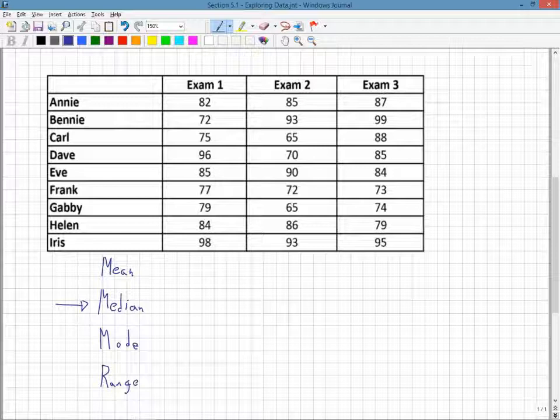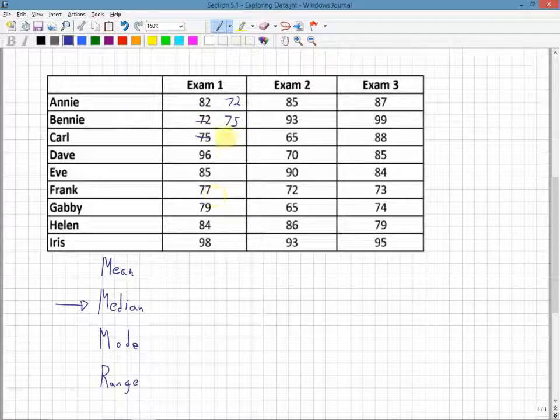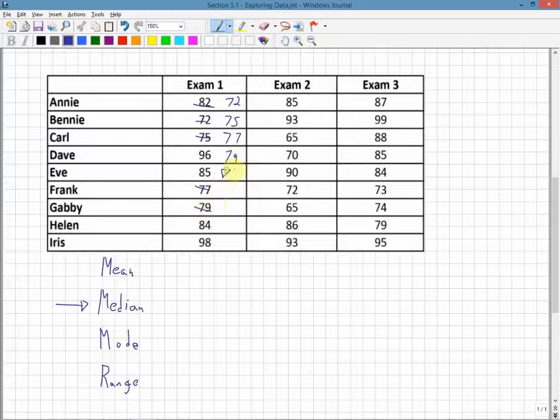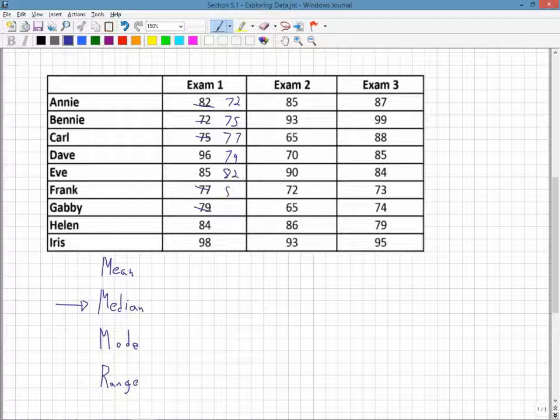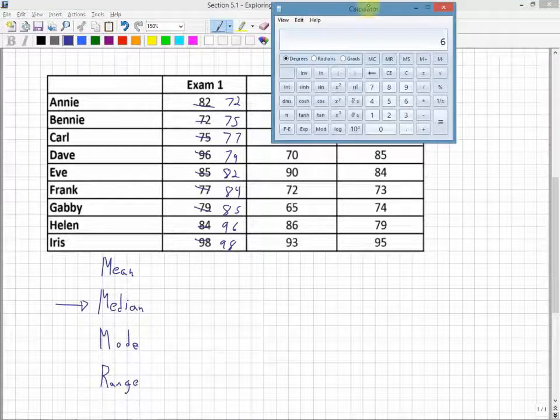We can reorganize this data from least to greatest as they are. I would put 72 first because that's the smallest. Then 75, so I've used 72 and 75. Next would be 77. The next value up would be 79, wait I missed 79, then 82, then 84, 85, 96, and finally 98. I have my data organized from least to greatest, which makes it easy to find the median.